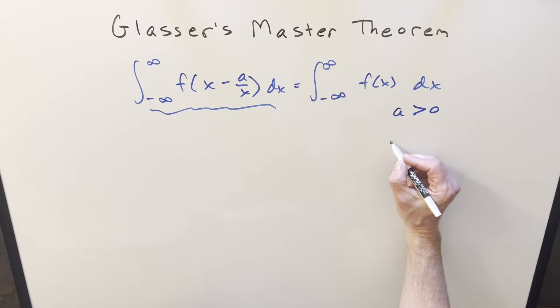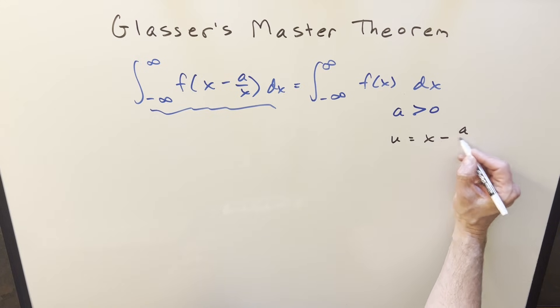So then starting with this left side here, all I'm going to do is let's just do a u substitution on it for x minus a over x. And before taking a derivative to get our dx, let's solve for x.